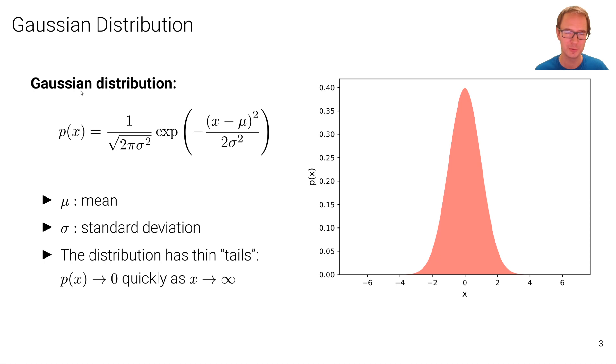The Gaussian distribution is parametrized in the 1D case by two parameters: the mean mu, which occurs here, and the standard deviation sigma, which occurs both here and also in the normalizing constant here. What we can see from the picture is that the distribution has thin tails, which means that as x approaches infinity, p of x very quickly goes to 0.